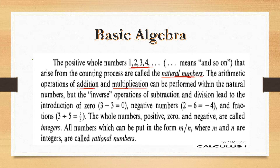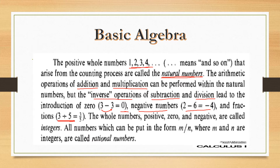But if we apply the inverse operations such as subtraction and division, these will lead us to zero — for example, 3 minus 3, 4 minus 4, or 10 minus 10 — and we will also get negative numbers when we encounter such types of problems. The whole numbers, positive, zero, and negative, are called integers.